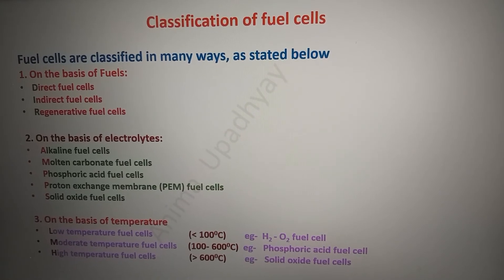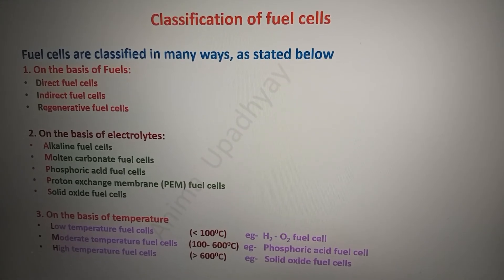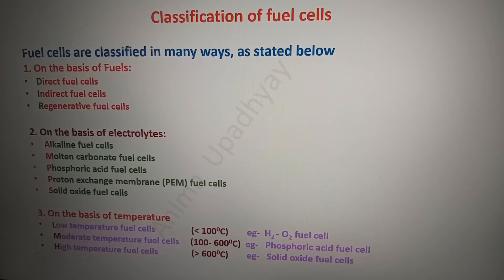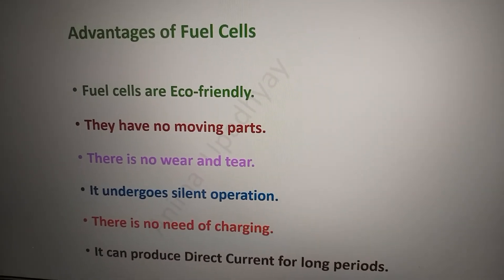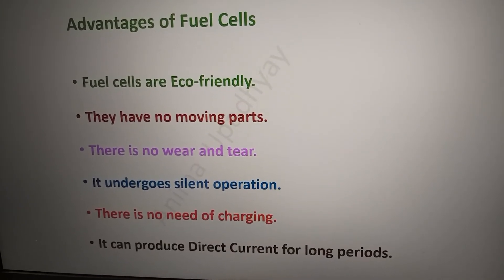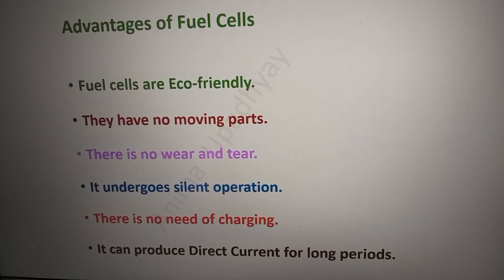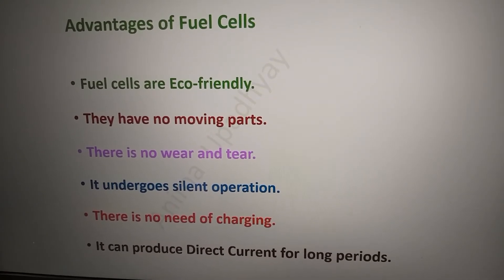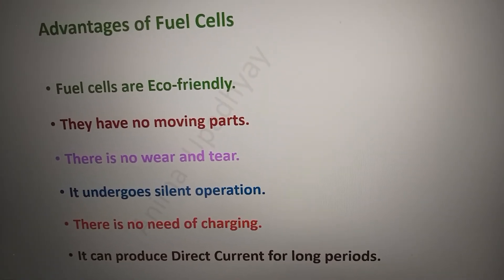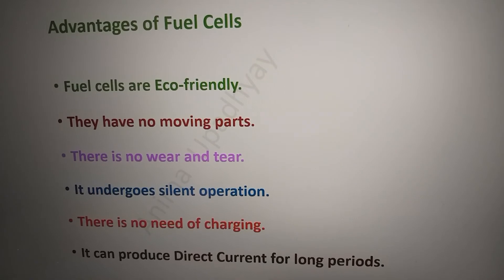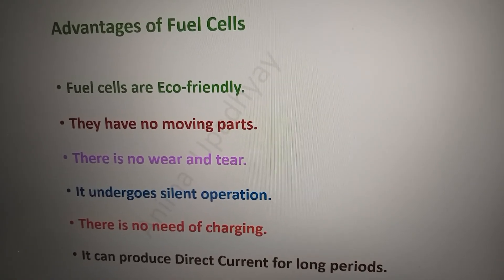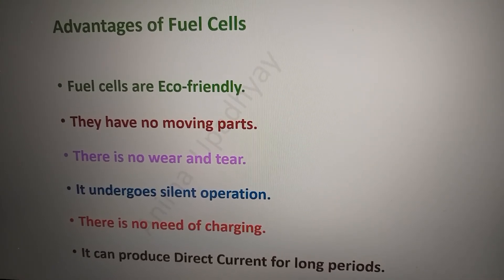This is how fuel cells are classified depending upon the type of fuel used, type of electrolyte, and working temperature range. There are many advantages of fuel cells: they are eco-friendly because the by-products are non-toxic; they have no moving parts, so there is no wear and tear and very little maintenance is required; they undergo silent operation; and there is no need to charge them, as they can produce direct current for prolonged periods.